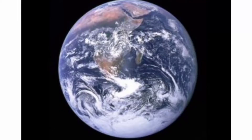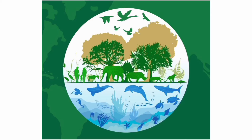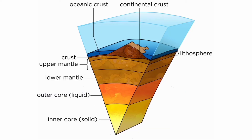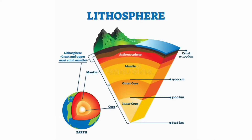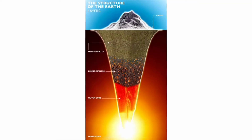The structure of the Earth. Earth is the only planet of the solar system on which life exists. The structure of the Earth is divided into four major layers: the crust, the mantle, the outer core, and the inner core. These layers are both physically and chemically different.